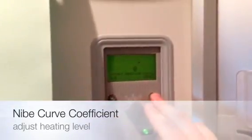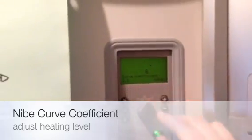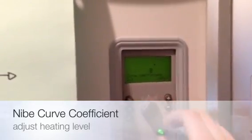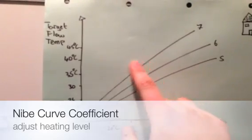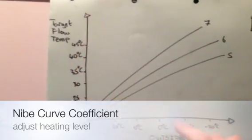Now, if we were to go from a heating curve 6 up to a 7 or an 8, what will happen is our temperature inside the brackets goes up. For argument's sake, at 0 degrees outside at heating curve 7, we now want more heat to go into the building.